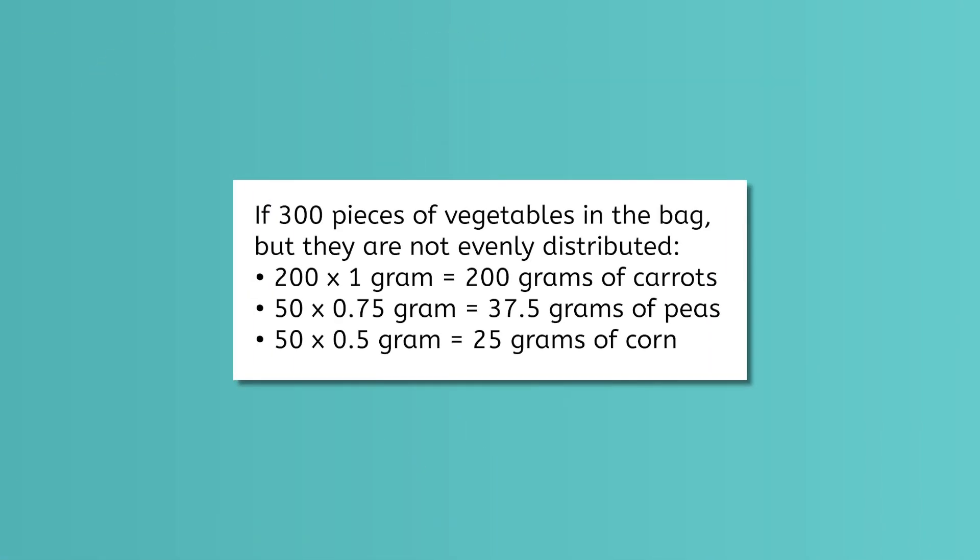What would happen to the average mass of a veggie in the bag if instead of an equal amount of each type of vegetable, you had 200 carrots, 50 peas, and 50 corn kernels? Let's calculate the mass to find out. If we multiply the mass of carrots, 1 gram, times the number of carrots, 200, we get 200 grams. If we multiply the mass of peas, 0.75 gram, times the number of peas, 50, we get 37.5 grams.